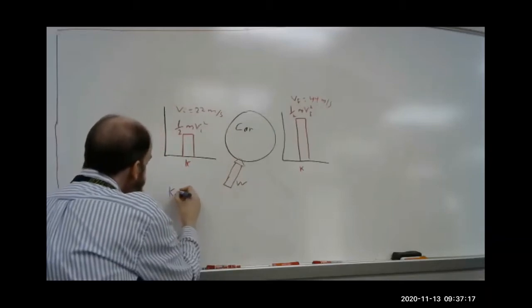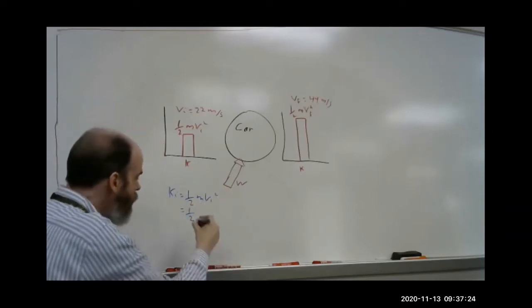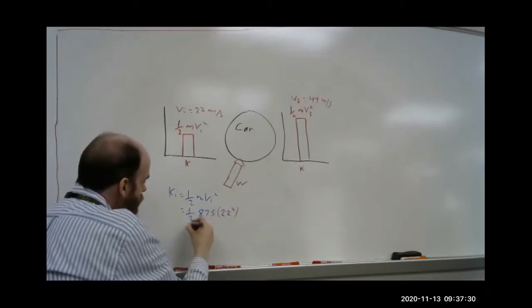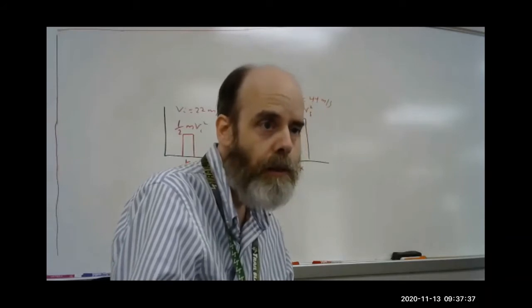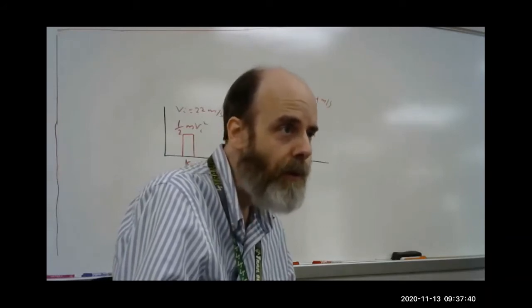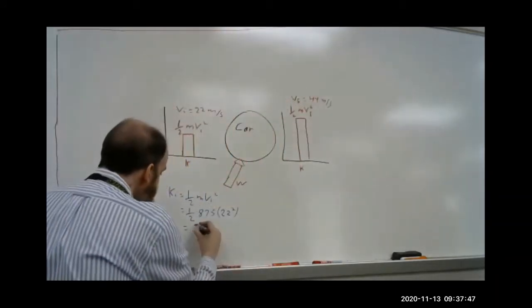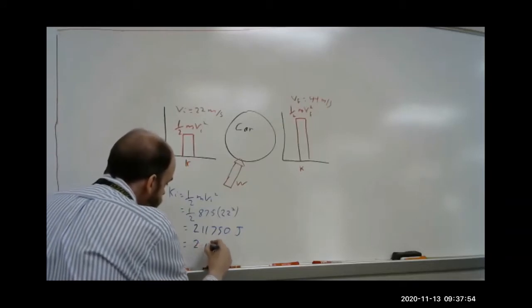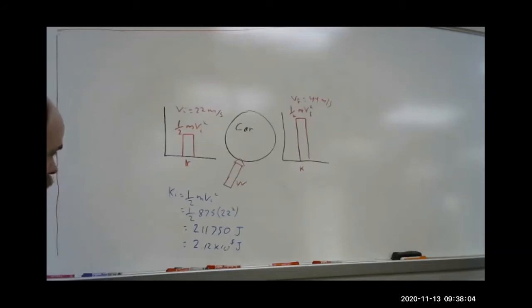So k initial is a half m v initial squared, which is one half times 875 times 22 squared. And what did someone get for this? Let me check what people had. So 211,750 joules. Now I can write this as 2.12 times 10 to the 5th joules. I'll just use three sig figs.